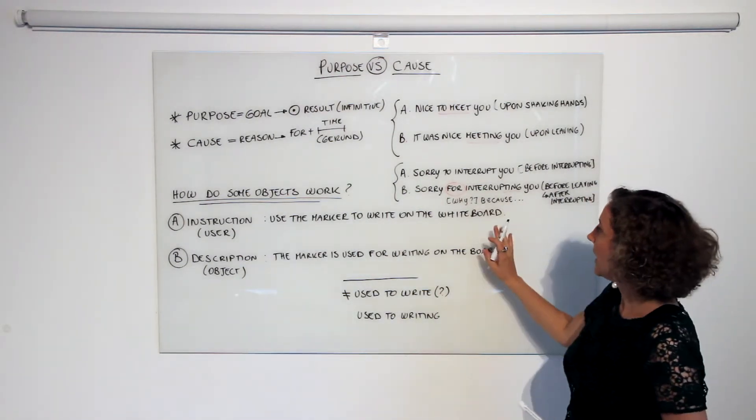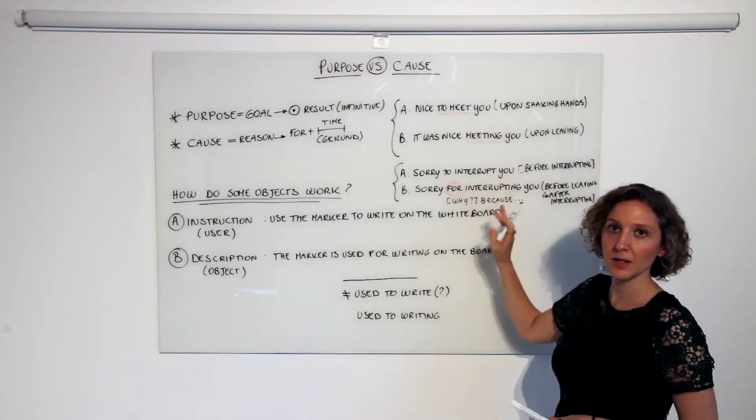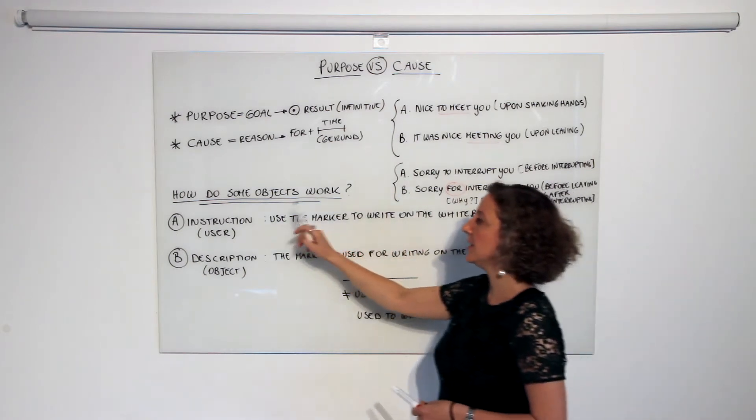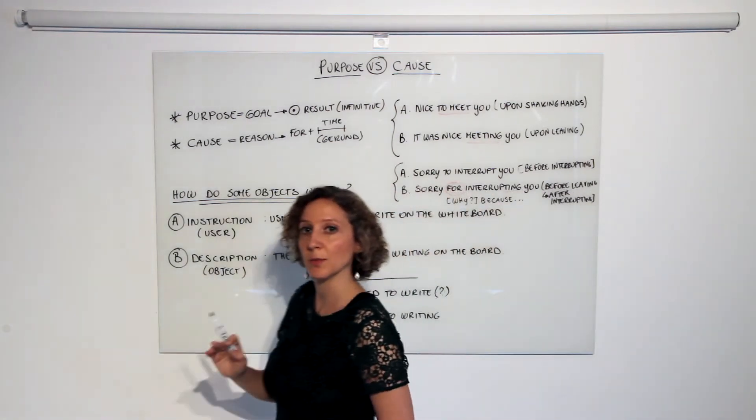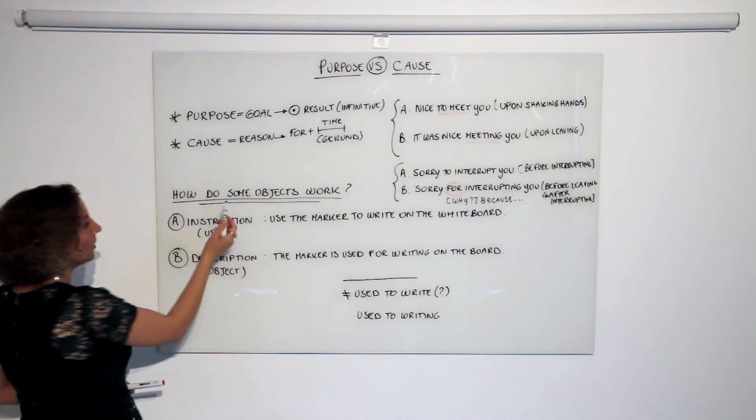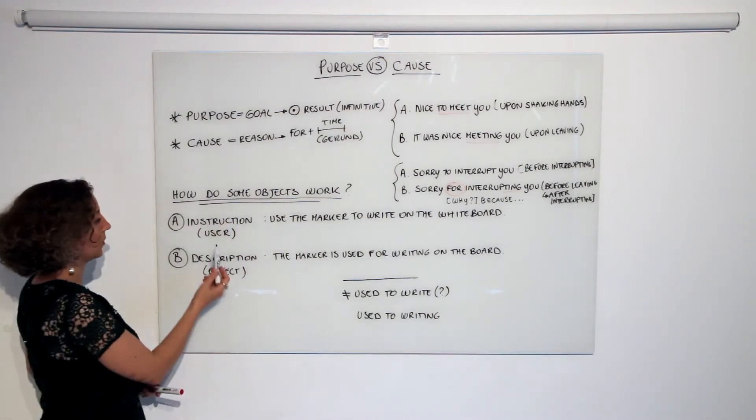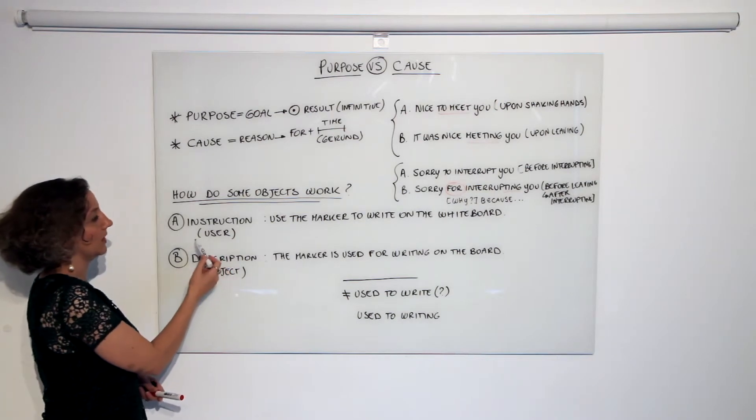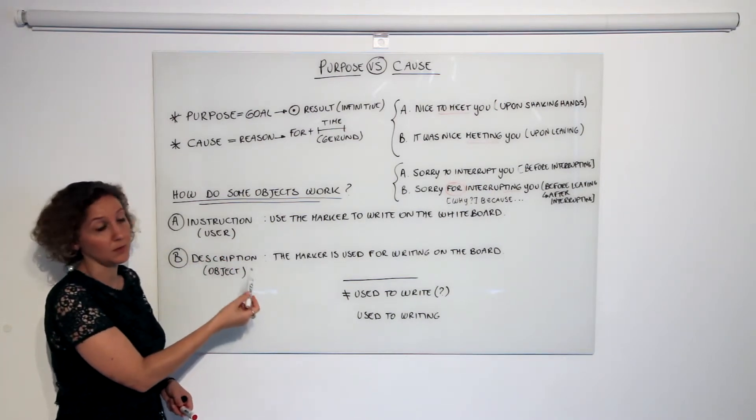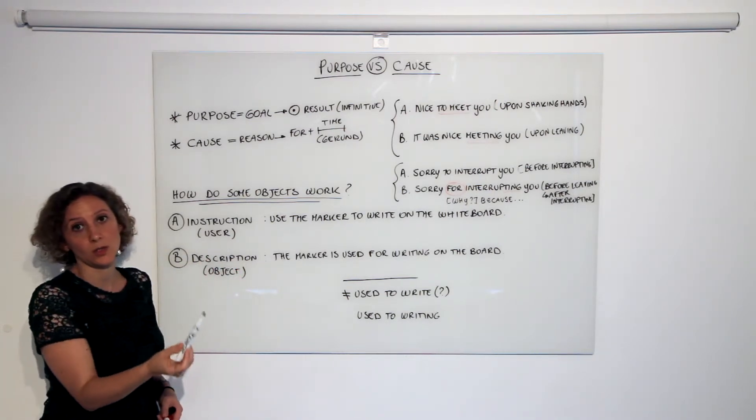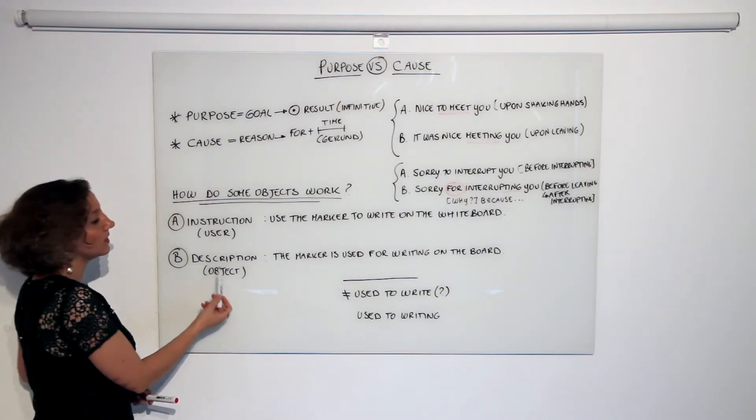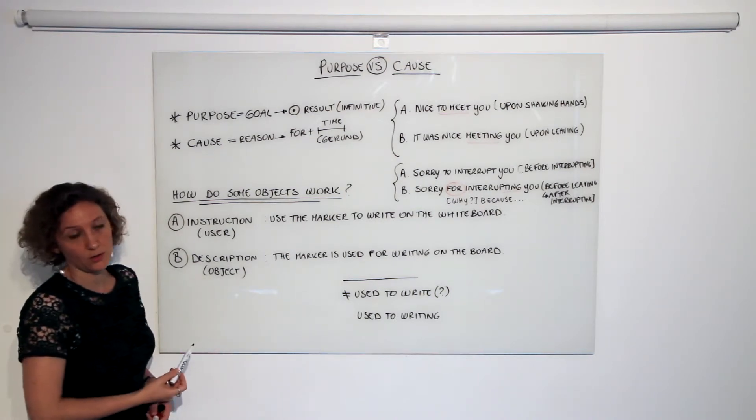Okay, now let's also apply this to explanations about how some objects work. We may focus on two elements when we explain something: we can focus either on the user and then give instructions about how the object works, or we describe the functioning of the object.